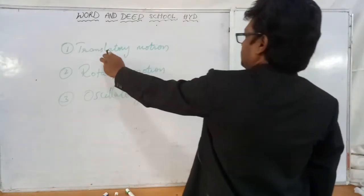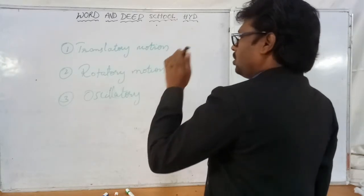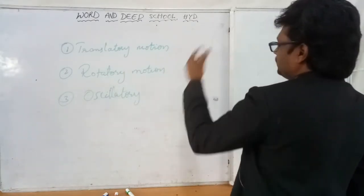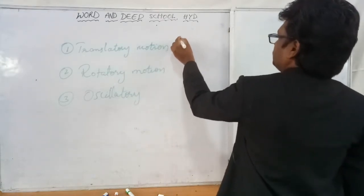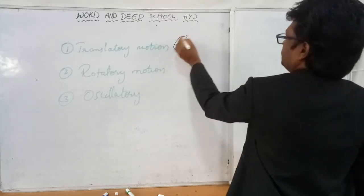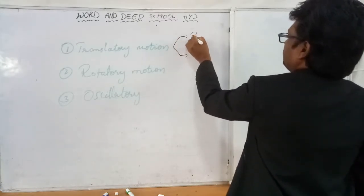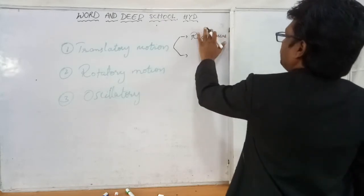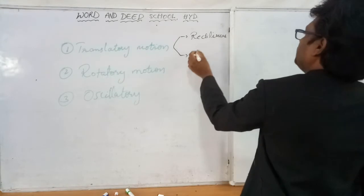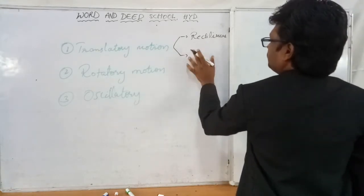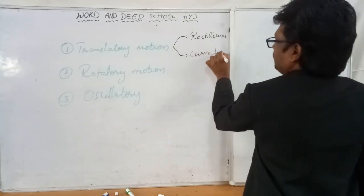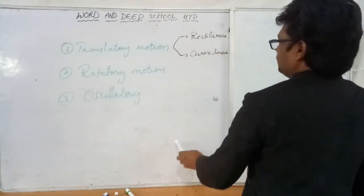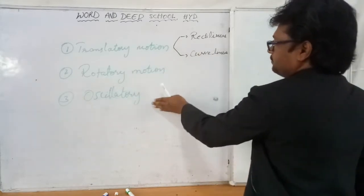The definition of translatory motion: it is the motion in which all parts of the body move in the direction of the motion of that particular body. This is of two types: one is rectilinear, and the other is curvilinear. We have completed this, and today we discuss the remaining types.